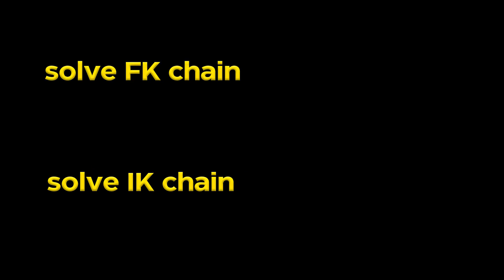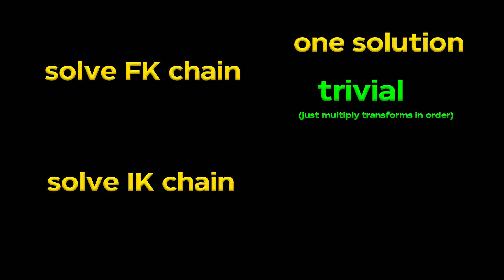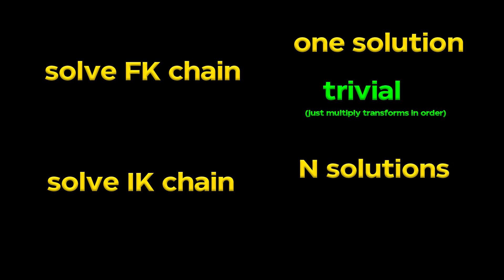In contrast with forward kinematic solution where you get one and only one end position given the joints angles, an abstract IK problem in the general case has 0, 1, or n solutions.